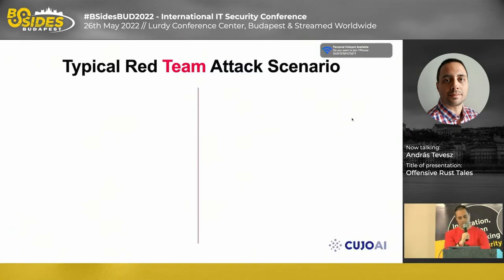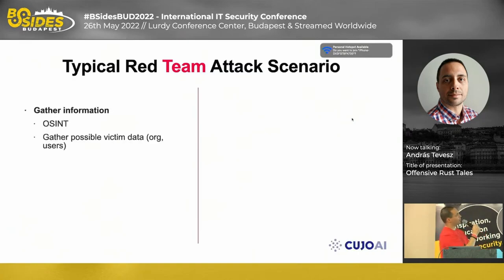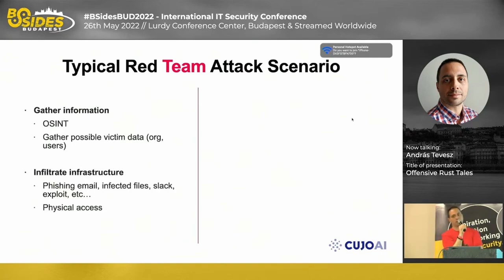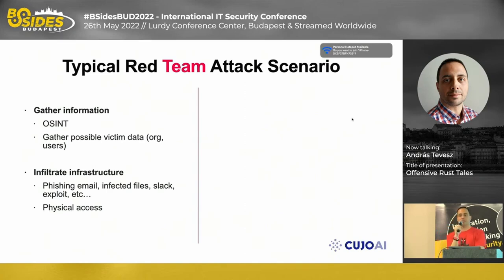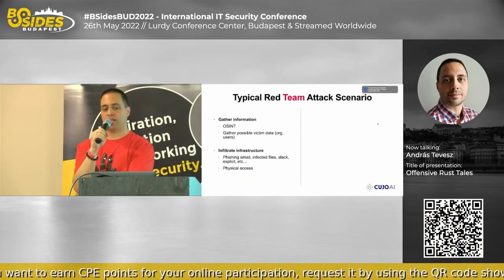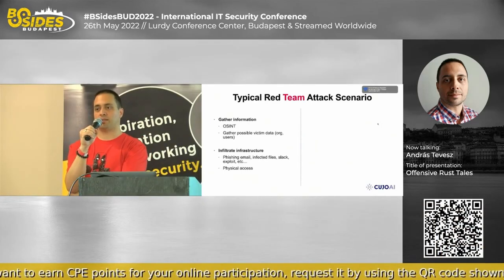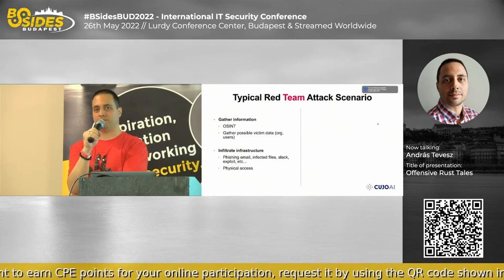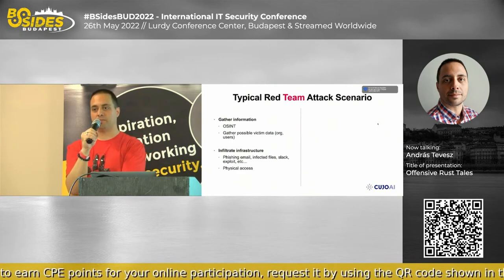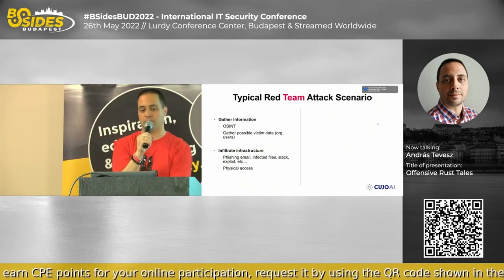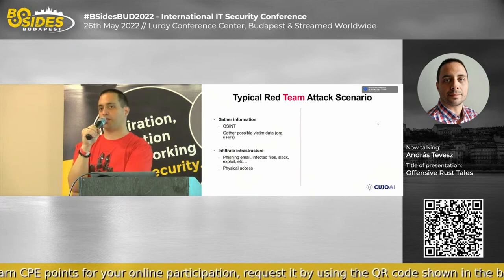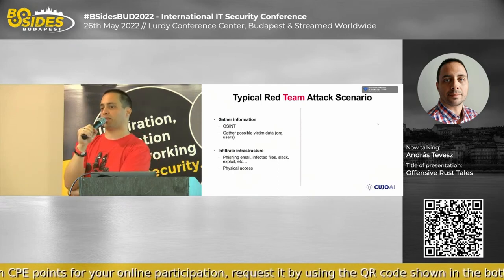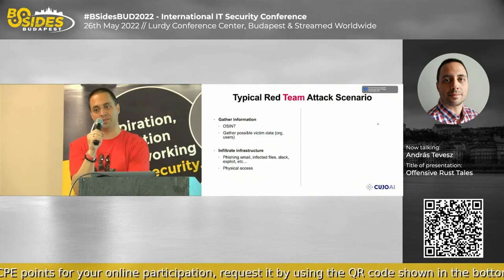Let's see a typical attack scenario. Normally, we start with information gathering. If you have an internal team, this is rather easy. If it's an external company, they should look up data the OSINT way — go to Shodan, DNS Dumpster, execute port scans, go to LinkedIn. Maybe you could even try to get a job at the company — HR will provide lots of information, like what systems are in use.